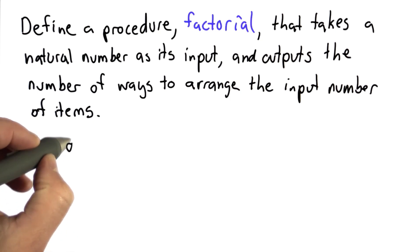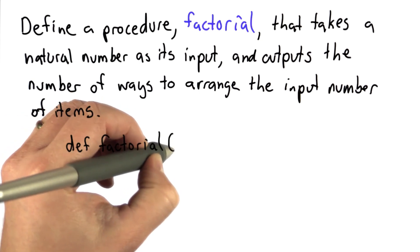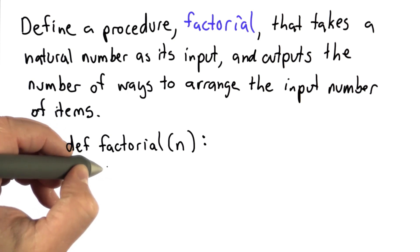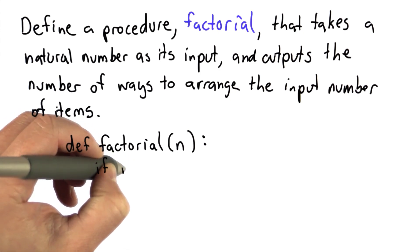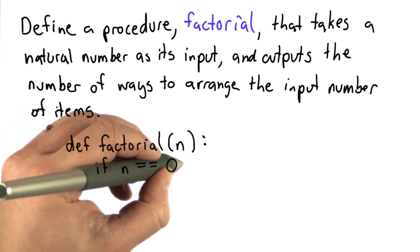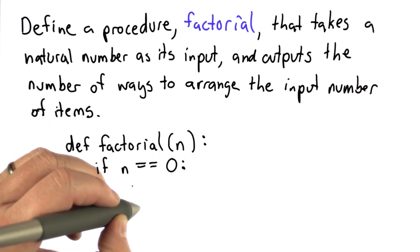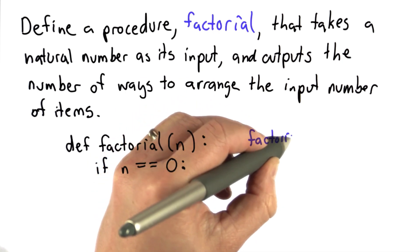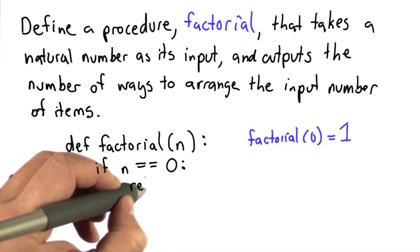Here's the code. We're going to define a procedure, just like the previous definition, with one input - a number we'll call n. We need to first check if we've reached the base case, so we'll use an if for that. We're going to check if n is equal to 0 - remember, we need the double equals for the comparison. That means we've reached the base case, and factorial of 0 is defined as 1, so when n equals 0, we should return the value 1.